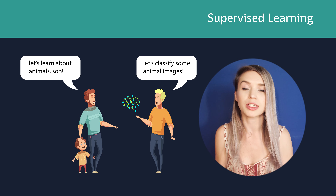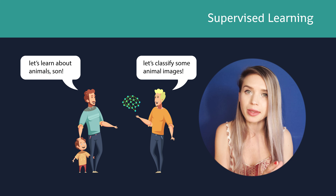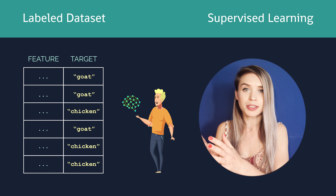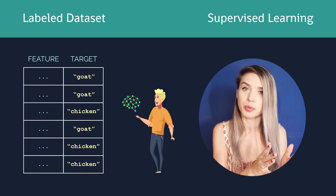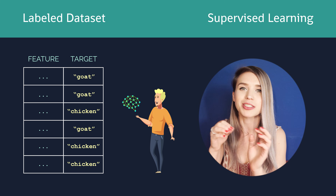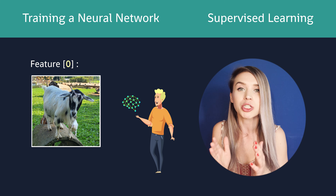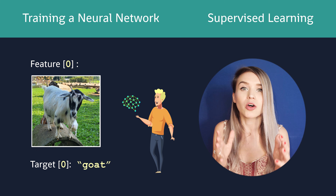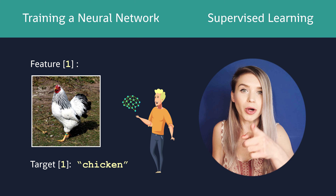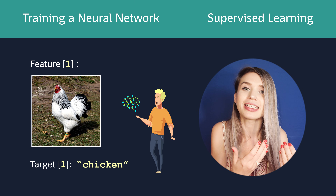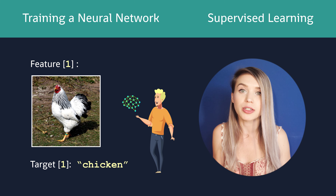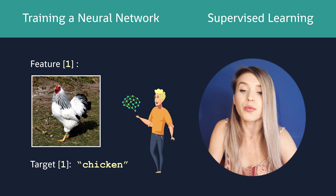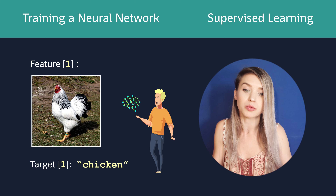Whenever we take this real-life example into the realm of computers, we are basically providing our neural network with a labeled dataset. This entire dataset is organized into pairs of features and targets, also known as input and output. The features in the case of our goat versus chicken neural network would be images of either goats or chickens. The targets will then correspond to a string saying goat or saying chicken, depending on the input image. So with our features we are pointing at an animal, and with our target we are explaining the name of the animal to our neural network. That's why supervised learning provides us 100% control of the information we expose our neural network to, and we are also controlling the conclusions about that information, which would be the labels.